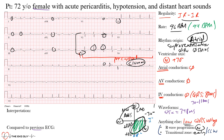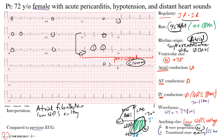Taking everything together for a final interpretation: irregularly irregular rhythm, rate of 96 bpm, likely atrial source — this is atrial fibrillation with a controlled ventricular response, within 60 to 100 bpm. If over 100 we'd call it rapid ventricular response or RVR. Normal axis, no significant atrial or AV conduction comments, normal intraventricular conduction. In our waveforms, we noted low QRS voltage — something to be aware of.